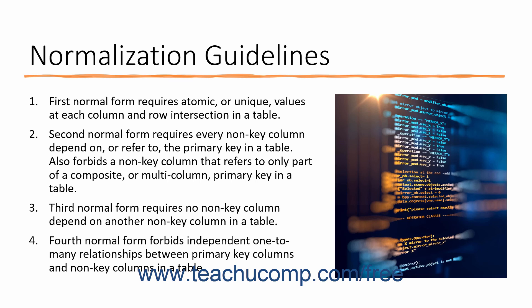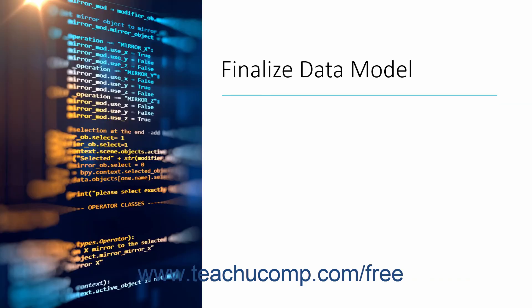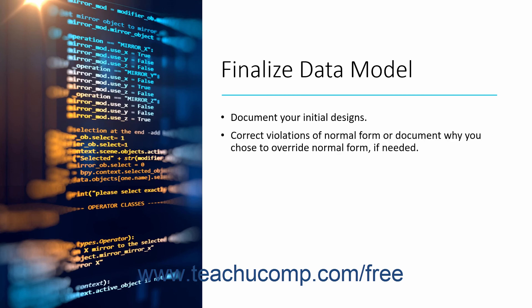Fourth Normal form forbids independent one-to-many relationships between primary key columns and non-key columns in a table. As you begin modeling your database tables, be sure to document your work as you create your initial designs. Correct violations of Normal form that you see, or make conscious decisions to override them. Always document why you chose to make the changes you do make.